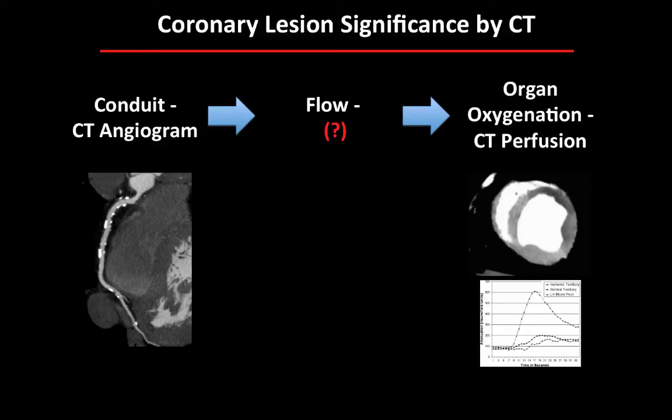If you think about lesion significance, the end result is a lack of oxygen supply to the underlying myocardium, and CT perfusion can show us that. Similarly, the CT angiogram can show us the conduit very well, but in between the conduit where blood flows and where it goes, there is blood flow itself, and CT currently does not have the ability to show us that at all.